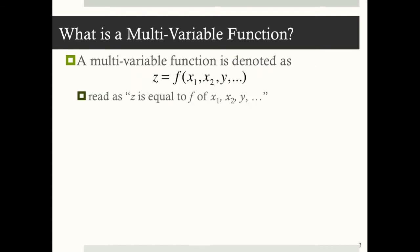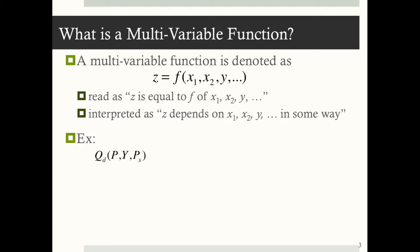You can denote a multivariable function in a variety of ways. We'll denote it as z equals f of x1, x2, y, and any other independent variable. We interpret a function like this as meaning z depends on x1, x2, y, and so on. For example, quantity demanded depends on price, income, and the price of a substitute good.